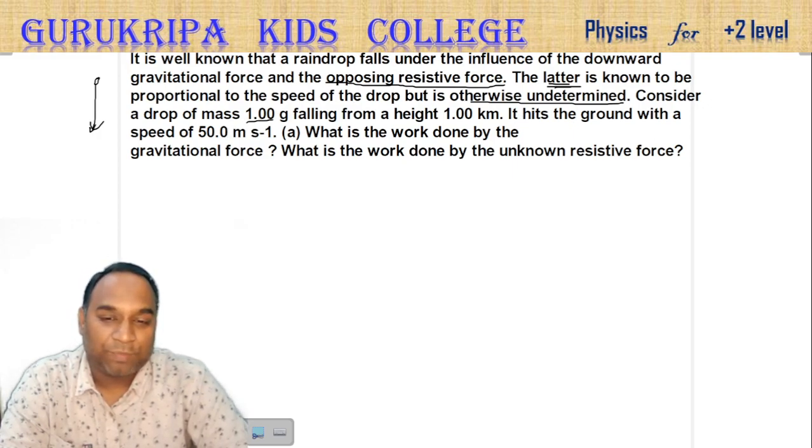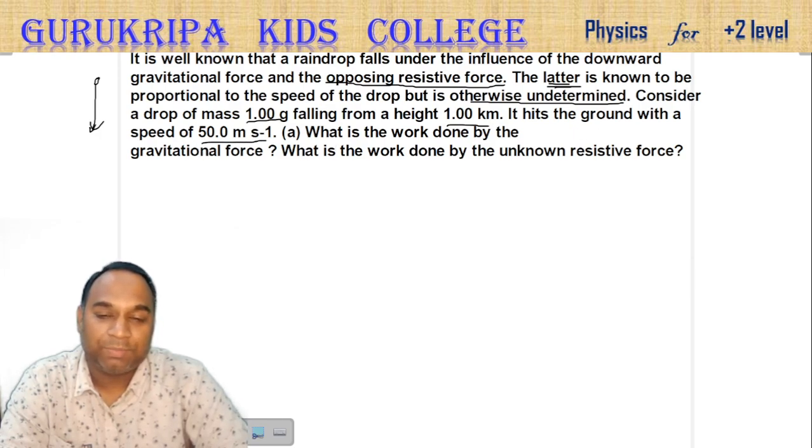Consider a drop of mass 1 gram falling from a height of 1 kilometer. It hits the ground with a speed of 50 meters per second.